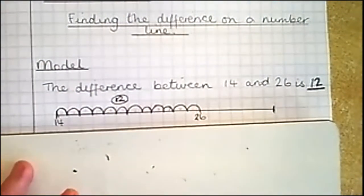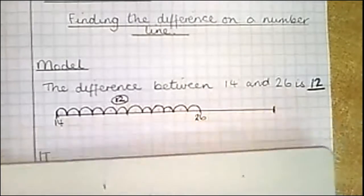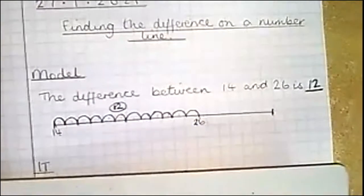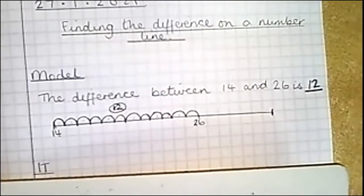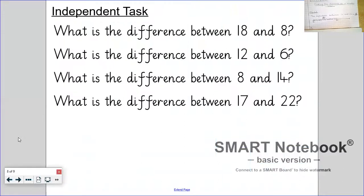So I'm going to now go back to sharing my screen so you can see your independent task. You can just write IT so you know it's independent. You have got four questions. I want you to pause the video now, and I want you to answer these questions just like you've done with the model. Drawing your number line, writing the smallest number on the left hand side, counting up to the bigger number, counting the jumps in between them, and writing your answer in. So pause the video and complete this task.